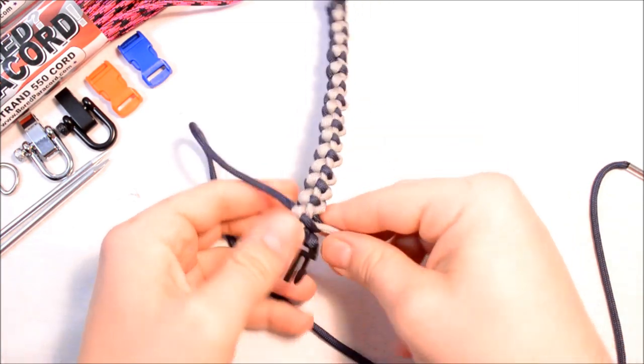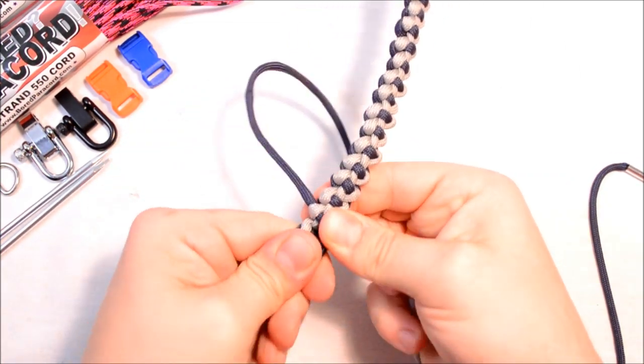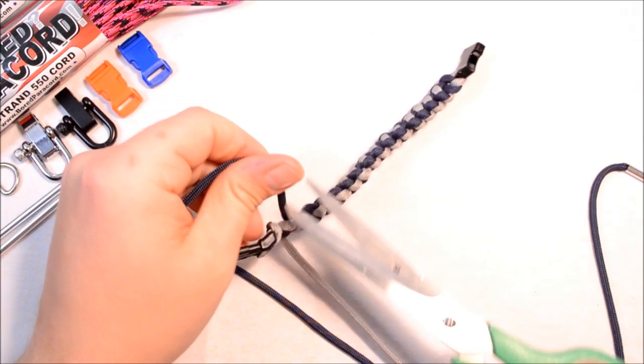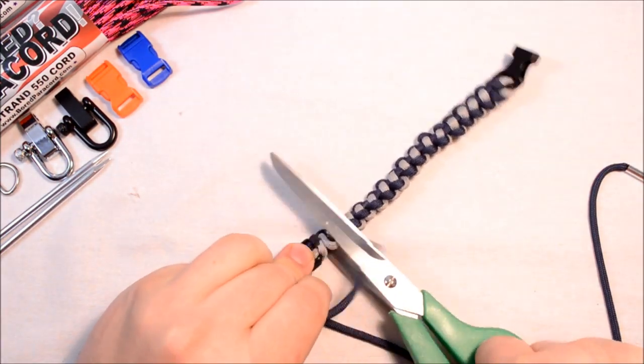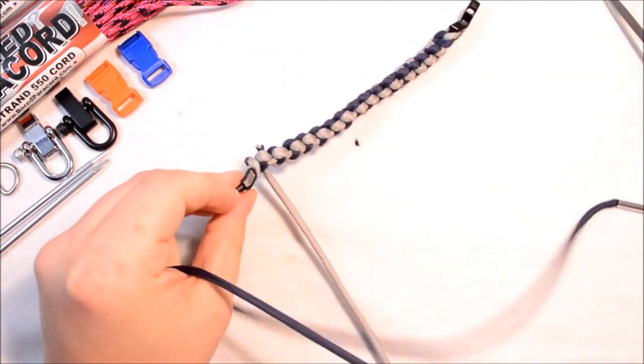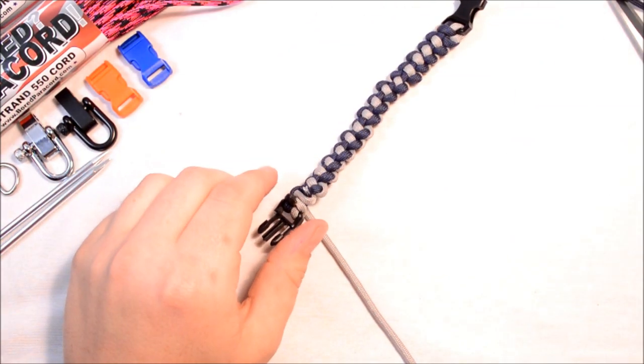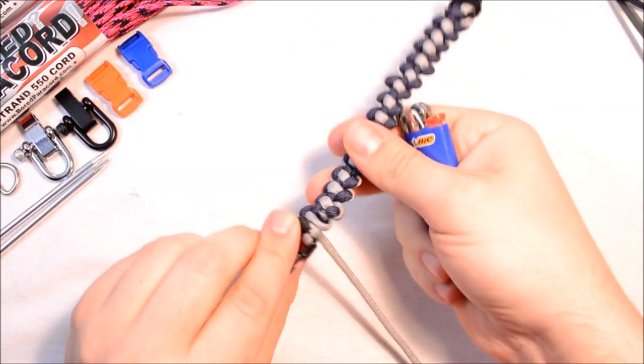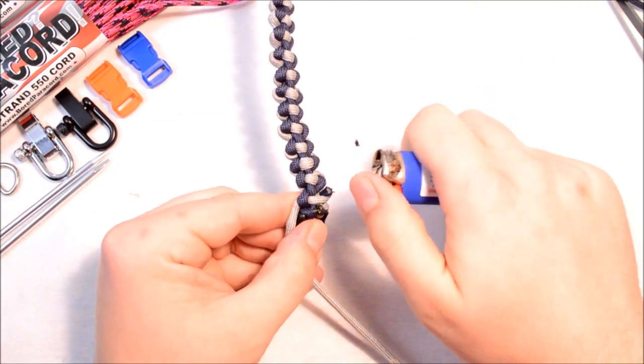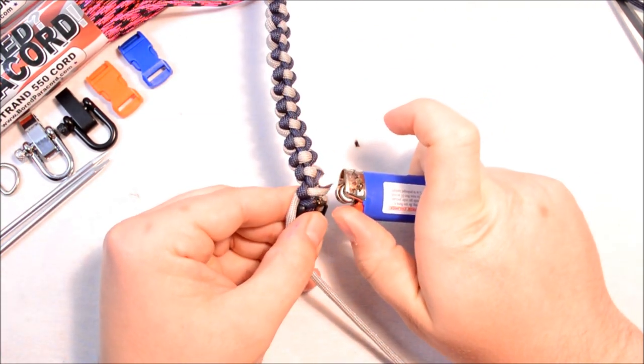All right, now I can cut my ends. When you cut this, you want to cut it so that you leave just enough on there to melt. You don't want to cut it so close that when it melts it kind of goes inside the paracord, but you want to leave just a little bit, maybe an eighth of an inch.